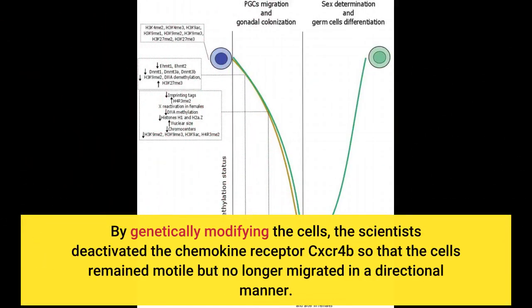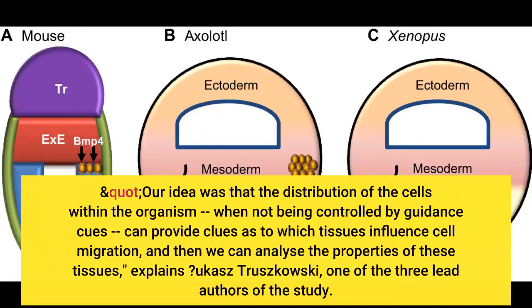By genetically modifying the cells, the scientists deactivated the chemokine receptor CXCR4B so that the cells remained motile but no longer migrated in a directional manner. Our idea was that the distribution of the cells within the organism, when not being controlled by guidance cues, can provide clues as to which tissues influence cell migration, and then we can analyze the properties of these tissues, explains Uksas Trishkovsky, one of the three lead authors.